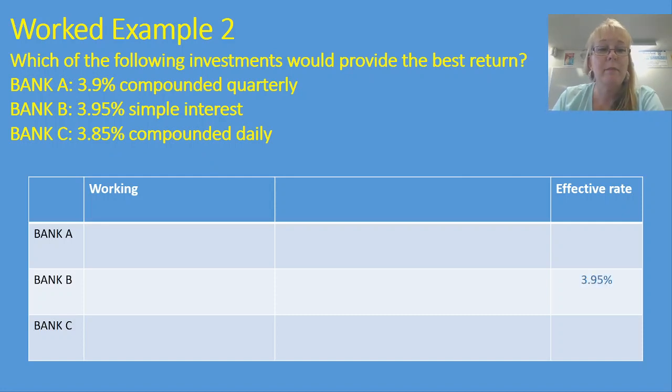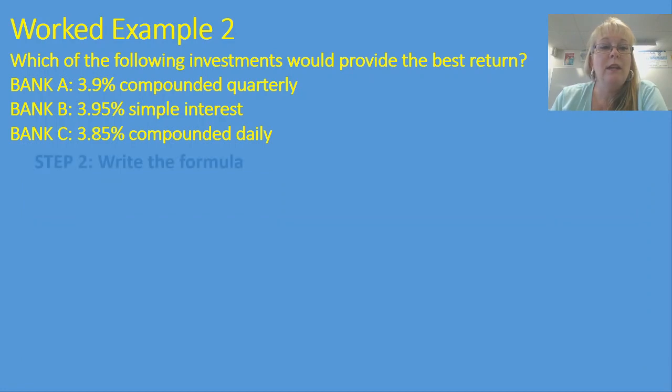Let's see how we would set this up. So first of all, I don't need to actually do any calculating for Bank B because it's simple interest. So the effective rate is going to be exactly the same as the rate that's given there, 3.95%. So I can simply insert that into that far column, don't need to do anything else. Let's look at the working that we would need to do for Bank A and Bank C.